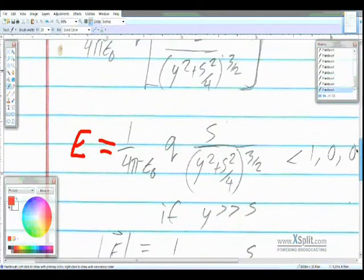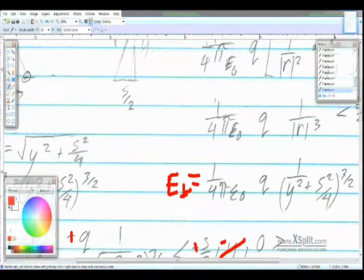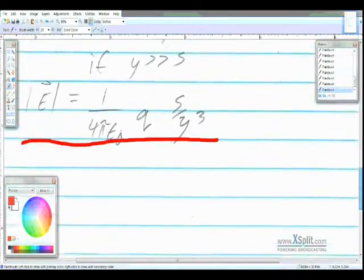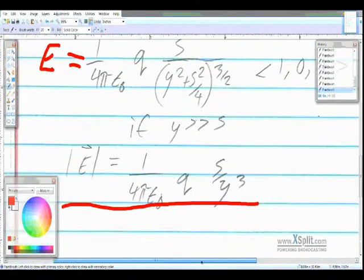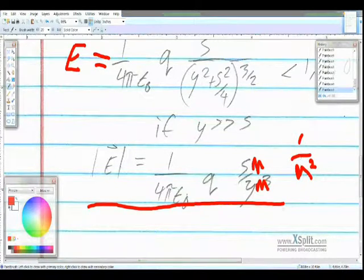Now if we want, we can check the units, make sure they match up here, because they should match the same for the point charge up here. So we get meters squared, we get coulombs, we have our constant. Down here we have our coulombs, our constant, we have meters, we have meters cubed, so that is meters squared over 1, and they match. And that's it.